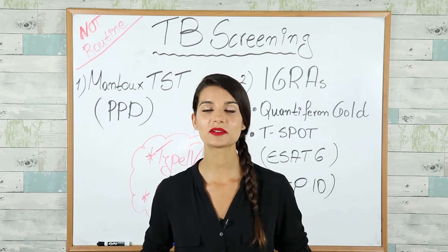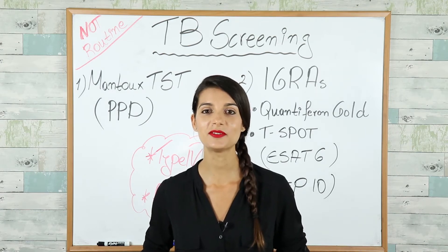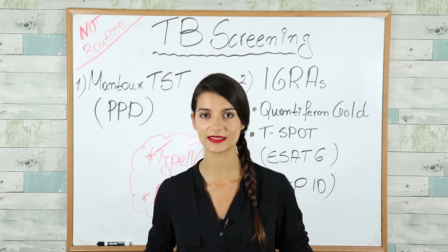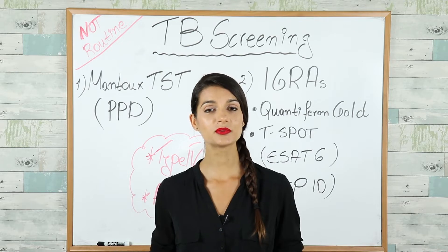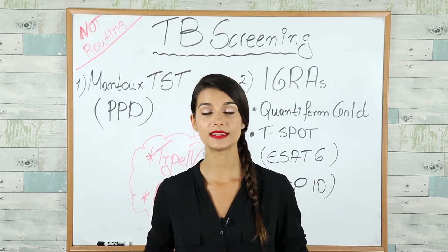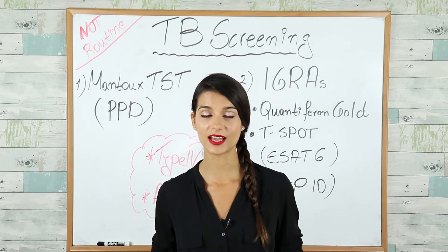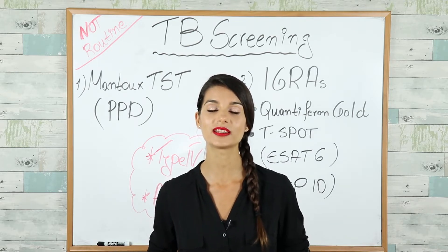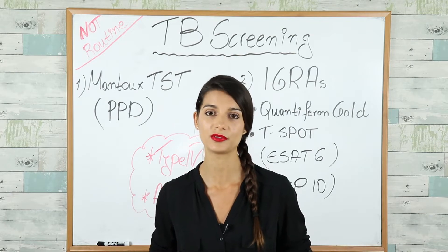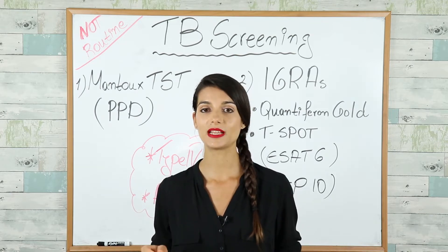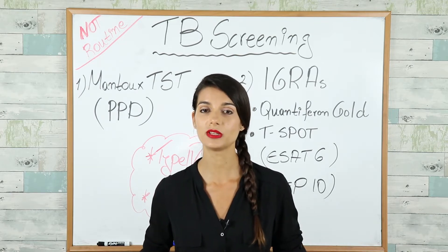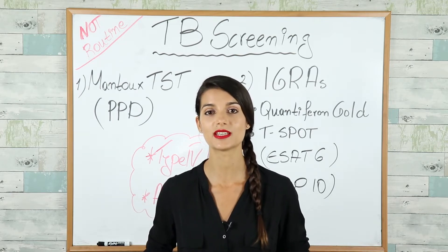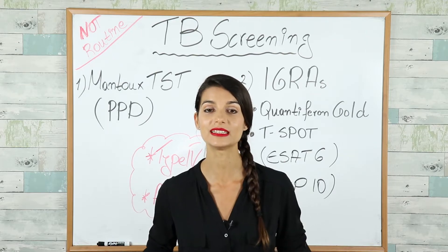Welcome to another video on high yield screening guidelines. According to the CDC, there are right now in the United States 13 million people infected with tuberculosis. Let's see how we screen for TB and how we assess the results from the screening tests.